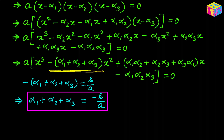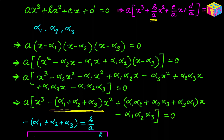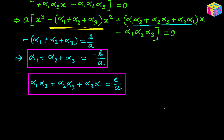Then if we compare the coefficient of the x term, in the original equation we have positive c over a, and in the expanded form we have the sum of products of two roots at a time — that is, alpha sub 1 times alpha sub 2 plus alpha sub 2 times alpha sub 3 plus alpha sub 3 times alpha sub 1. Comparing those, we get another important relationship.